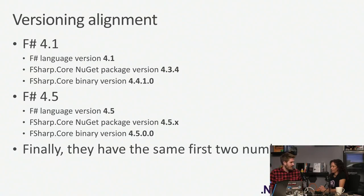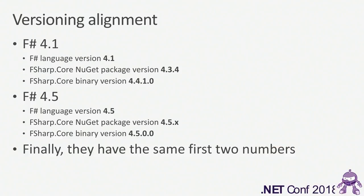Let's talk about versioning. In F# 4.1, you had F# language version 4.1, an FSharp.Core NuGet package version 4.3.4, and an FSharp.Core binary version 4.4.1.0. Those numbers are all different. The binary version was confusing because the first four stood for CLR version 4 — there was a point-in-time problem with older vs. newer versions of .NET Framework, needing to differentiate between .NET Framework 2.0/3.5 and 4.0 and higher. F# developers with F# 4.1 had to inherit that history without benefiting from it.